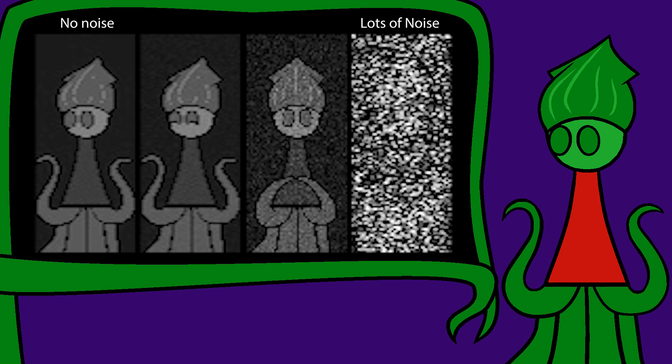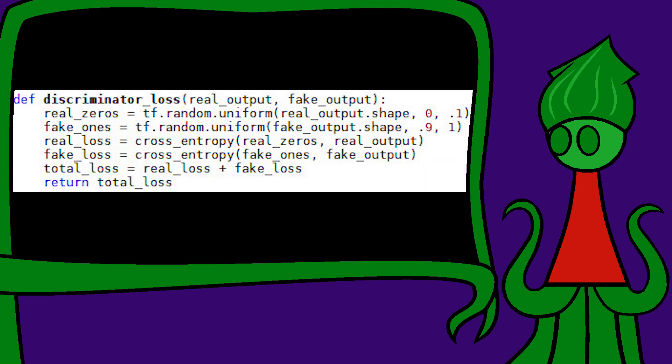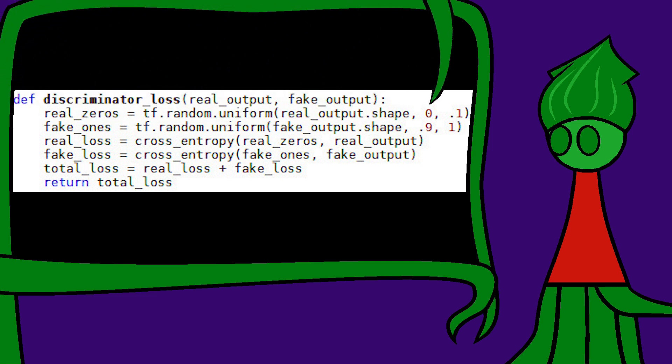Then, when training the discriminator, we give it noisy labels. We don't label real art 0 and fake art 1. We label real art from 0 to 0.1, and we label fake art from 1 to 0.9.